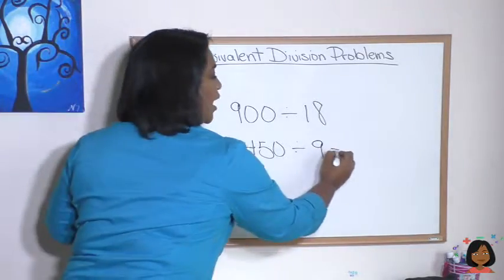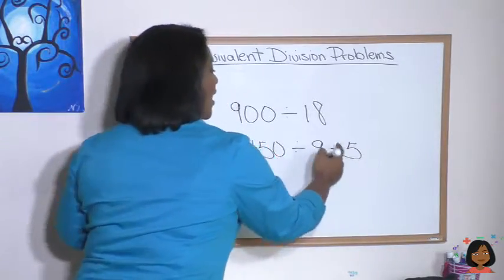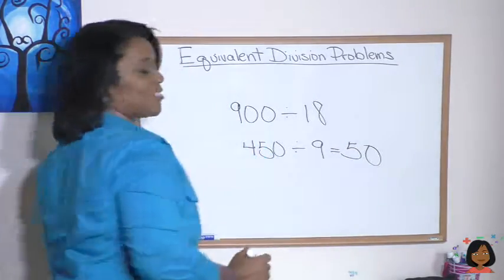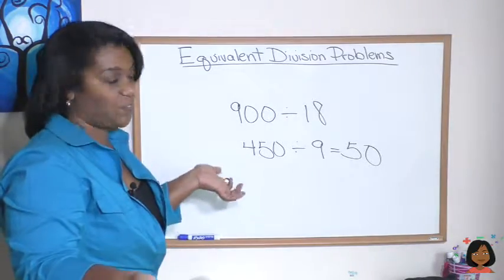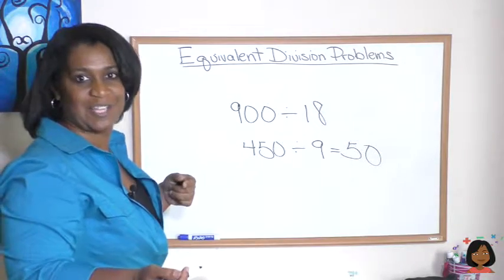Well, we know that 9 goes into 45 five times, and 9 goes into 0, 0 times. So, the answer is 50. I could do that in my head a little easier than I can do 18 and 900.